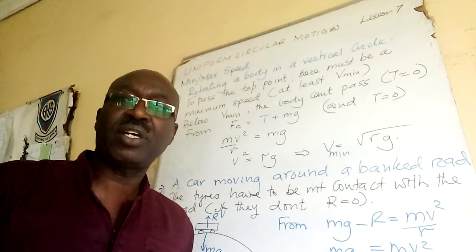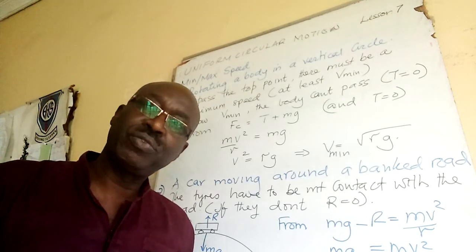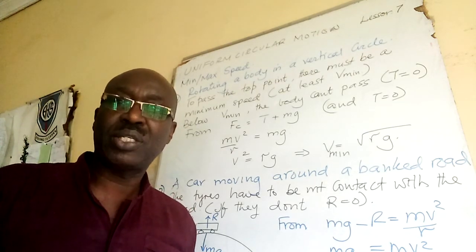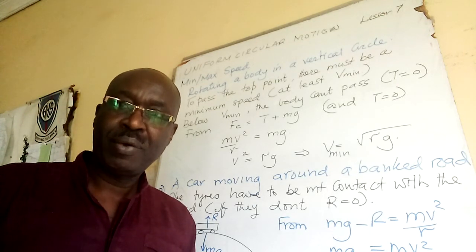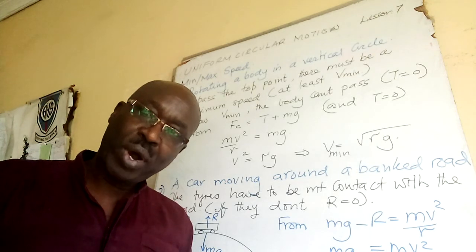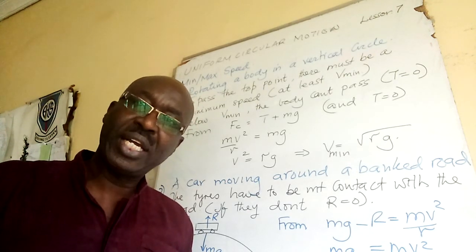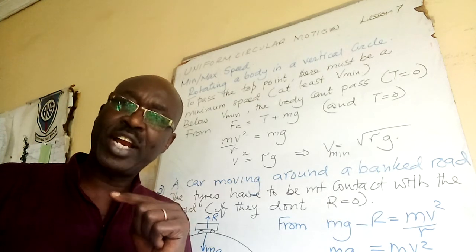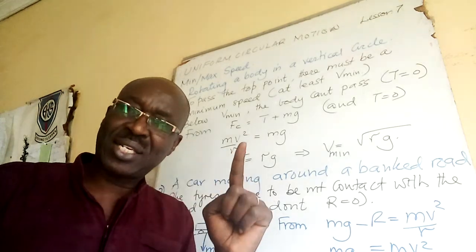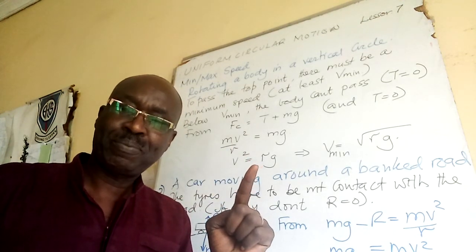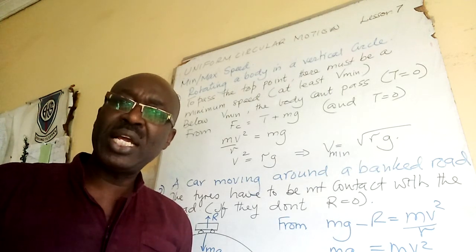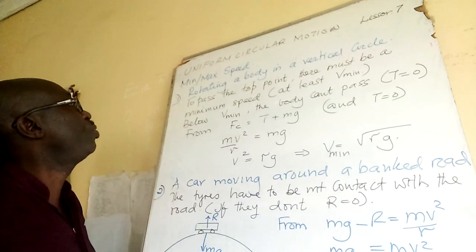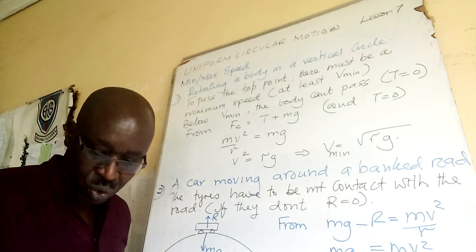Welcome folks, this is lesson 7, a continuation of uniform circular motion. I want to explain maximum and minimum speed in two situations: when you are rotating a body in a vertical circle — what speed is required for the body to pass the highest point — and the speed required to negotiate a corner.